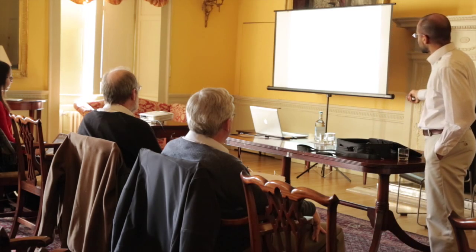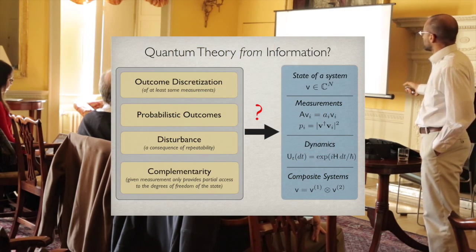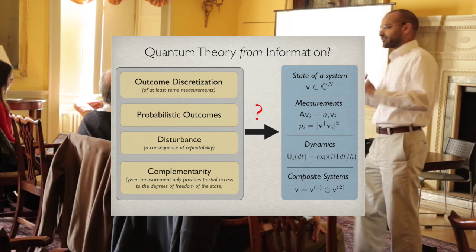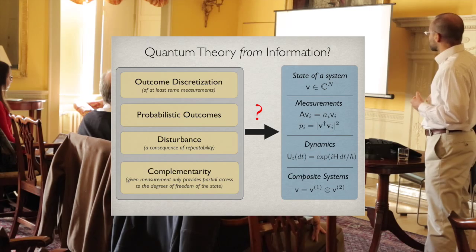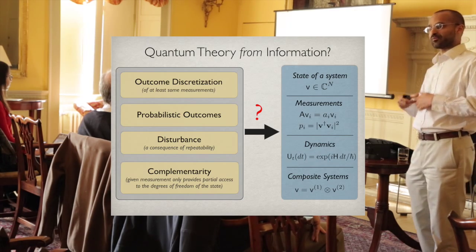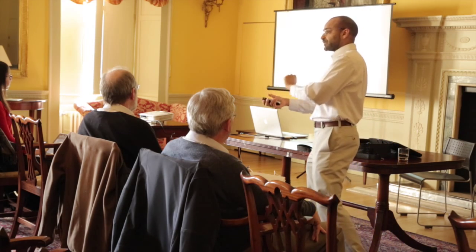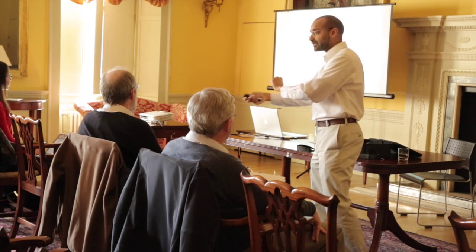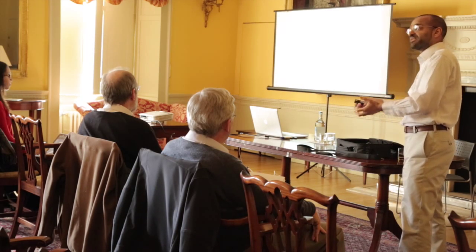Essentially, can we go from the left-hand side, which are really statements about measurement processes, and derive the mathematics on the right-hand side? Then we could have an understanding of quantum theory as really about this interface between our measurement process and reality.